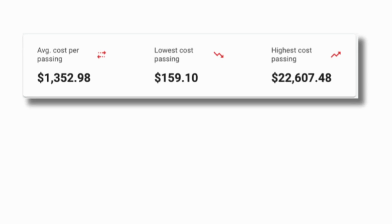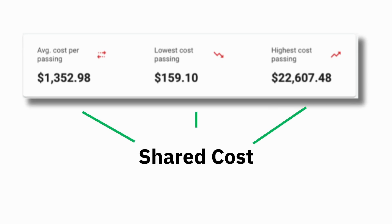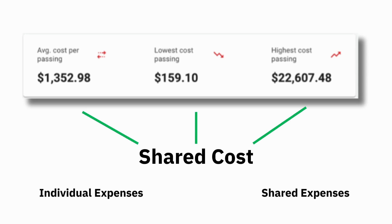Following these, there are values representing the cost range of expected costs per passing. This begins with the average cost per passing, followed by the lowest and highest cost passings. These figures are based on shared costs, which include both individual and shared equipment expenses, ensuring that each design element's cost is distributed fairly among the addresses served by it.